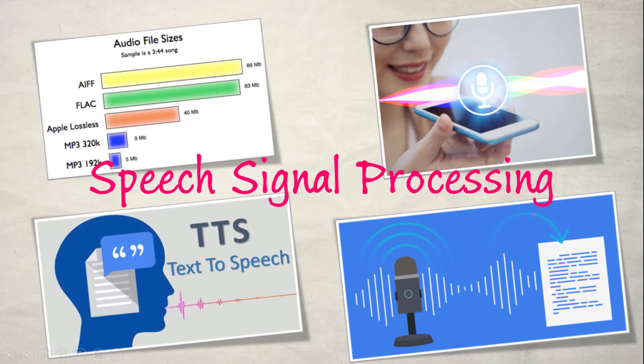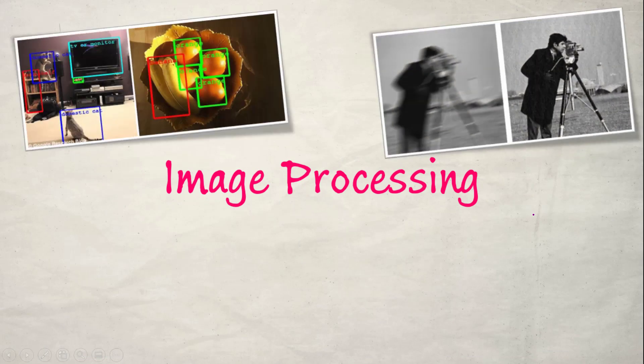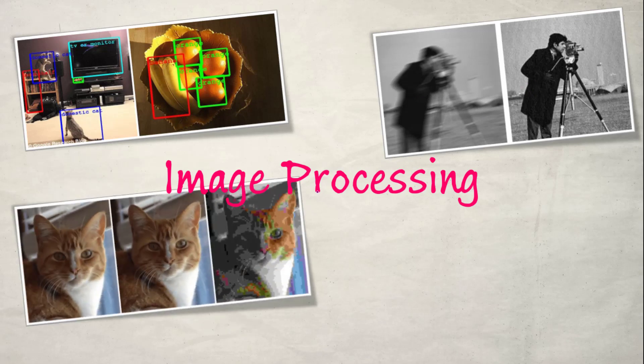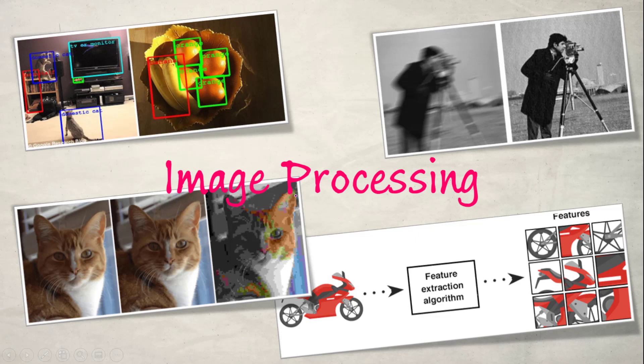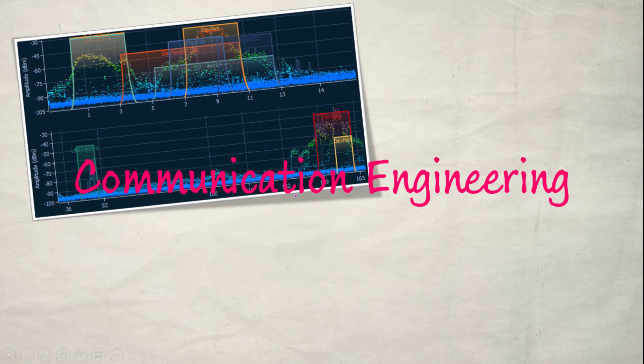In image processing there are many applications such as object identification, improving image quality, compression, and feature extraction. Even though many of these operations are now done using artificial intelligence, deep learning, and machine learning techniques, the initial stages of pre-processing, signal acquisition, and generating signal outputs are all handled using signals and systems concepts.